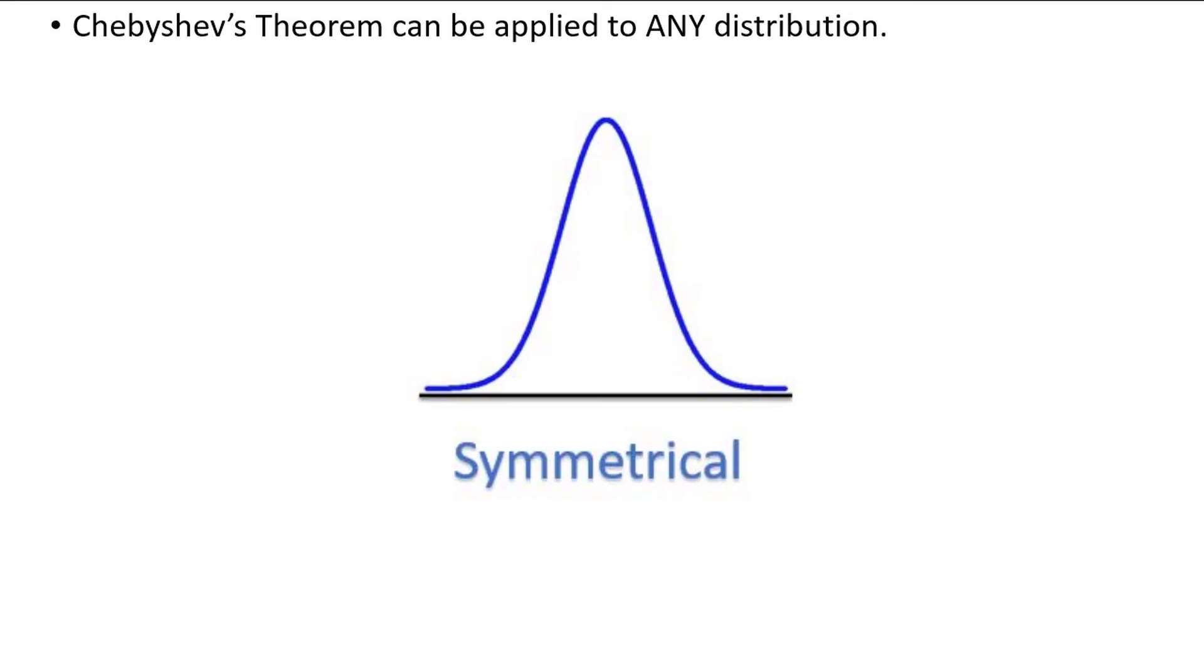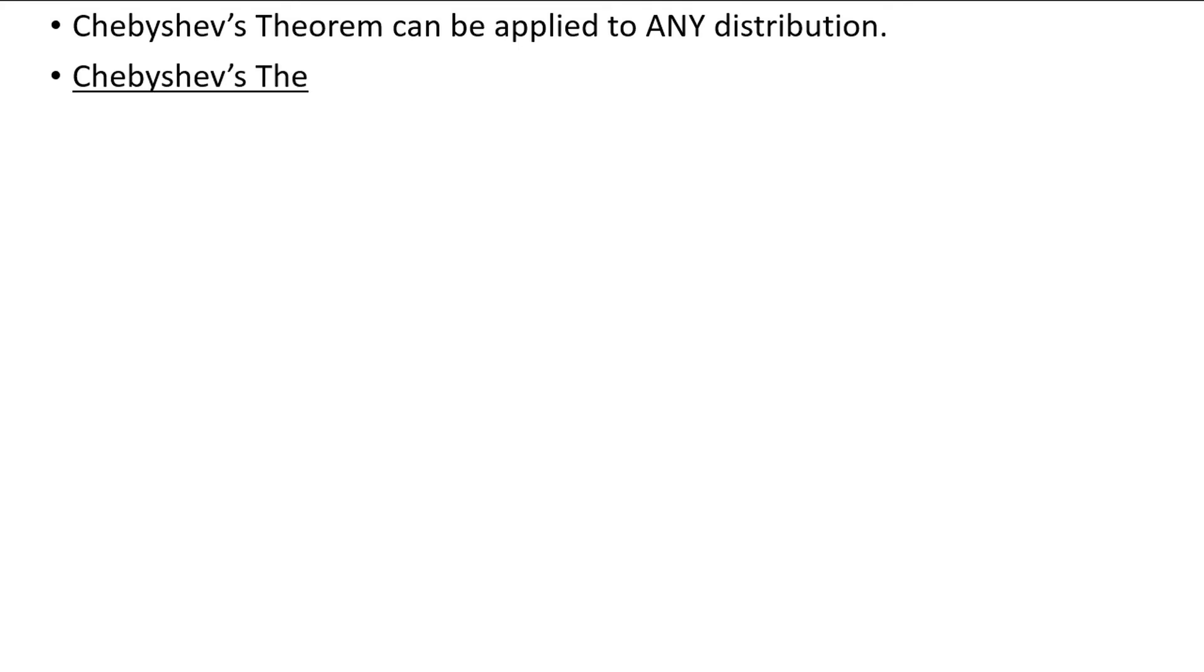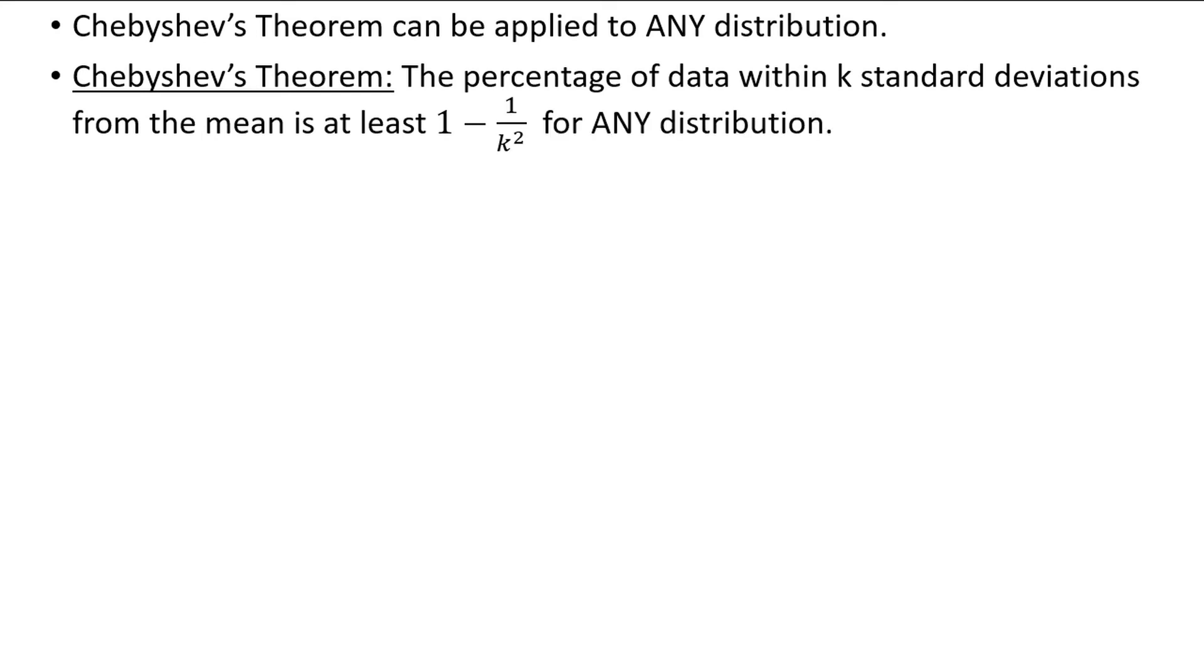It doesn't matter if the distribution is symmetrical, left skewed, right skewed, bimodal, uniform, or anything else. Chebyshev's theorem says that the percentage of values within k standard deviations of the mean is at least 1 minus 1 over k squared for any distribution.